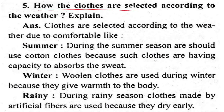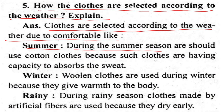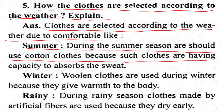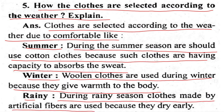How are clothes selected according to the weather? Clothes are selected according to the weather for a comfortable life. During summer, we should use cotton clothes because such clothes have the capacity to absorb sweat. During winter, woolen clothes are used because they give warmth to the body. During the rainy season, clothes made from artificial fiber are used because they dry easily.